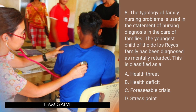Question number eight: The typology of family nursing problem is used in the statement of nursing diagnosis. The youngest child of the Del Rosario family has been diagnosed as mentally retarded. How do you classify this? Is it A, health threat? B, health deficit? C, foreseeable crisis? Or D, stress point? The answer is letter B, health deficit. Failure of a family member to develop according to what is expected — mental retardation — is a health deficit.